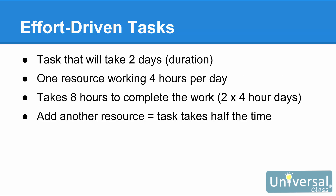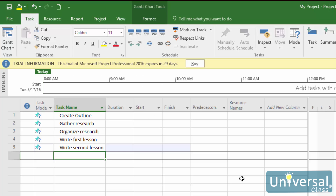Here is how an effort-driven task works. Let's say you have a task set up that will take two days — that's its duration. You have one resource assigned to the task working four hours a day, so it will take eight hours, or two four-hour days, to complete the work. If you add another resource to this effort-driven task, it will only take half the time because the work will be split between them. All tasks are effort-driven by default.